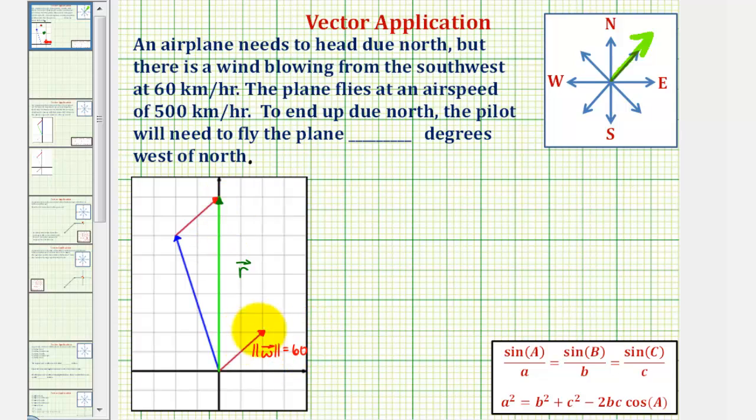And now because the wind is blowing the plane in the direction of northeast, it's going to have to head west of north or in the direction of this blue vector here. So let's call this blue vector, vector p, and because the plane flies at 500 kilometers per hour in still air, the magnitude of vector p is equal to 500.